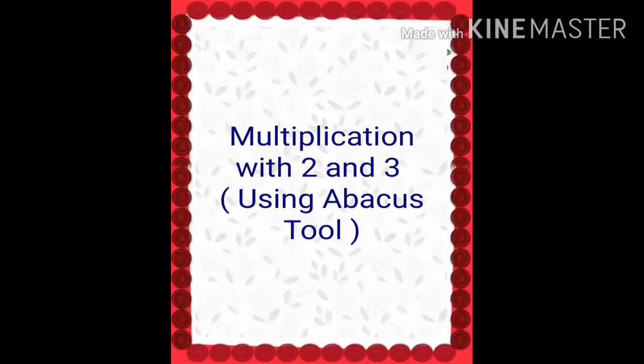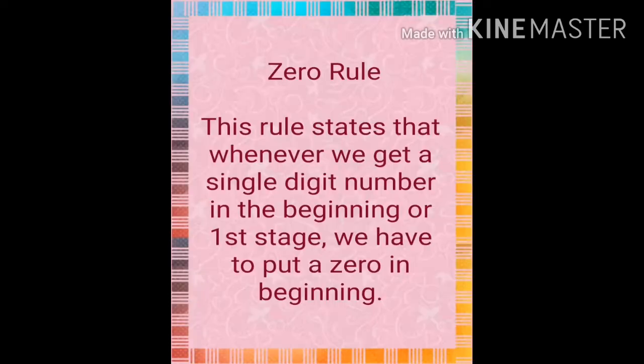Now multiplication with 2 and 3 using the Abacus tool. For this calculation you should learn the tables from 2 to 9 very thoroughly. Now we will discuss the zero rule. This rule states that whenever we get a single digit number in the beginning or first stage, we have to put a zero in front of it. You will understand this rule better by applying it in the method.